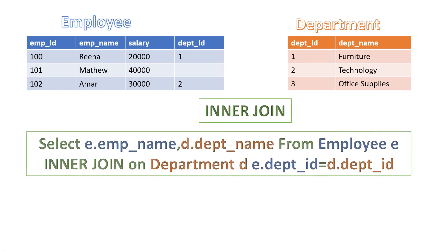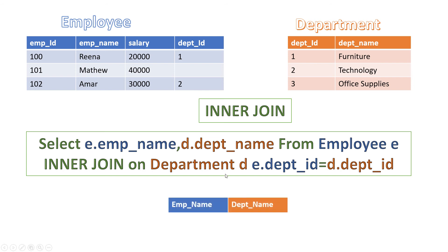What if you want to get only specific columns in the output? You need to write: SELECT e.employee_name, d.department_name. You need to identify from which table you want to bring each column. I am giving alias 'e' for the employee table and 'd' for the department table. So I write d.department_name for department name and e.employee_name for employee name. In the output, we get the employee name and the department name.